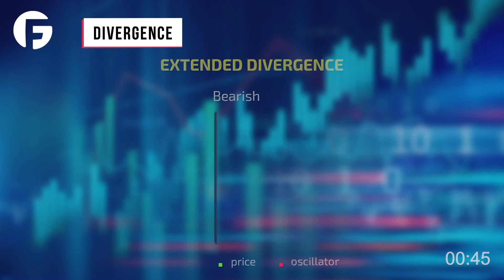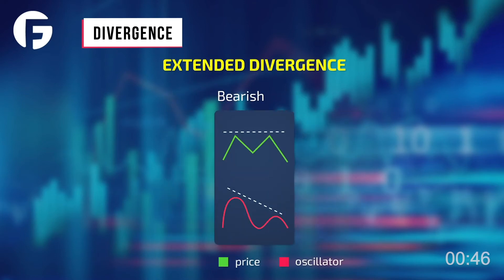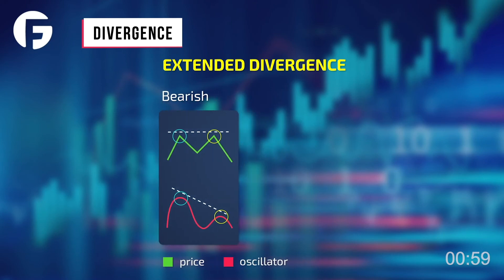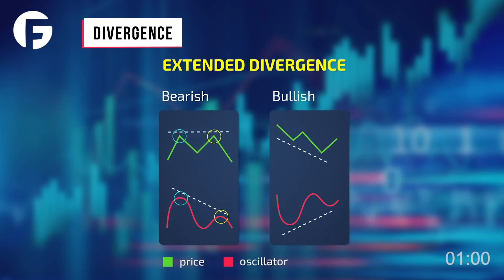Third, Extended Divergence. Oscillators reach a peak far apart at the same time as price peaks, which are approximately at the same level. It also has two variations: Extended Bearish Divergence, where prices are on the decline and the sale of assets; and Extended Bullish Divergence, where the price goes up and the moment is coming to start the purchase.